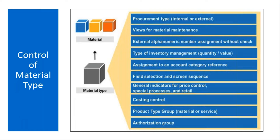What is a procurement type? It will control internal or external — internal means whether it is produced, or external means whether it is purchased. All these are controlled by this material type, as well as views for material maintenance, what views need to be maintained, number assignment, type of inventory management, quantity update and value update, fields assignment to an account category reference, field selection, and screen sequence. This we will discuss later on.